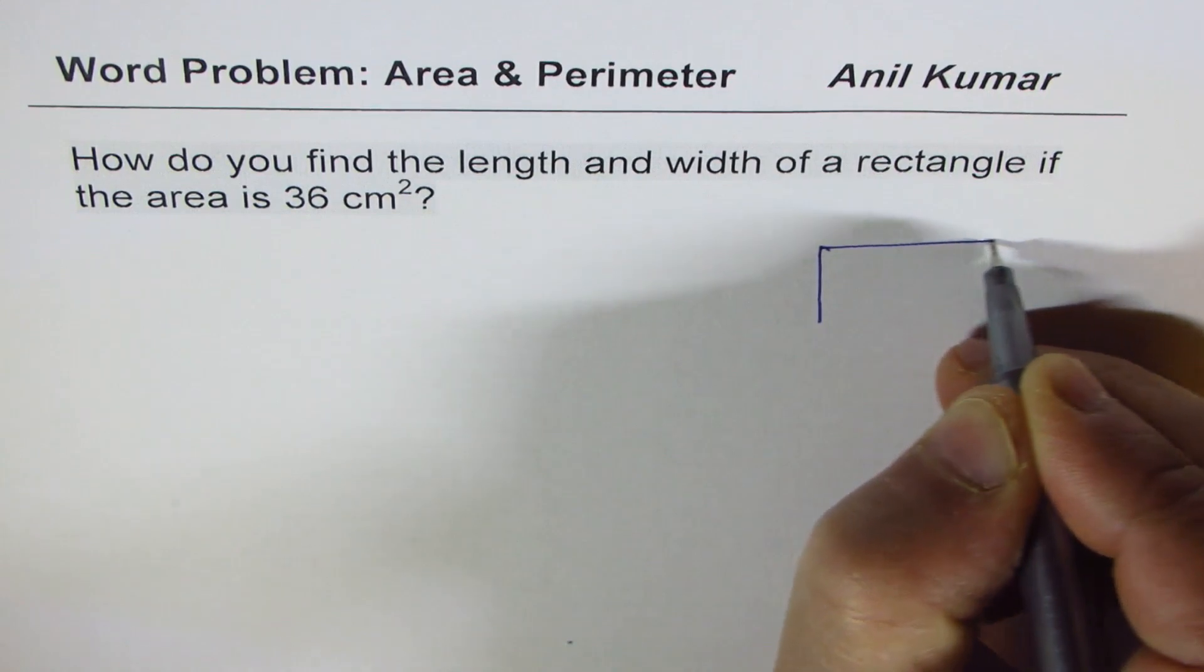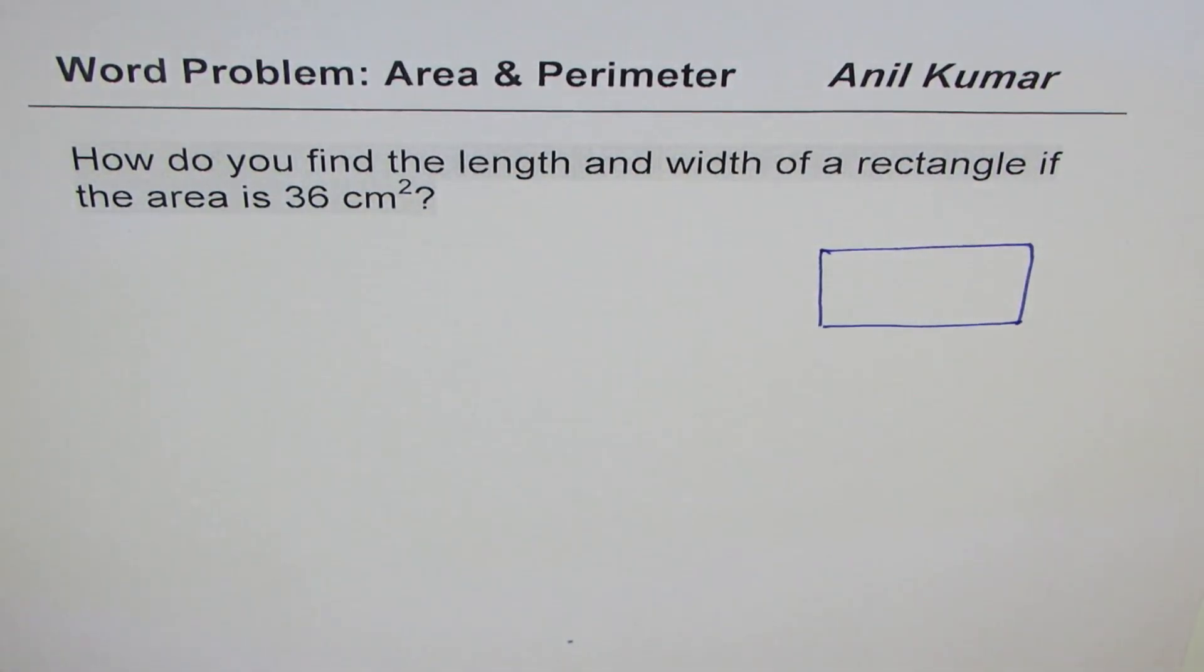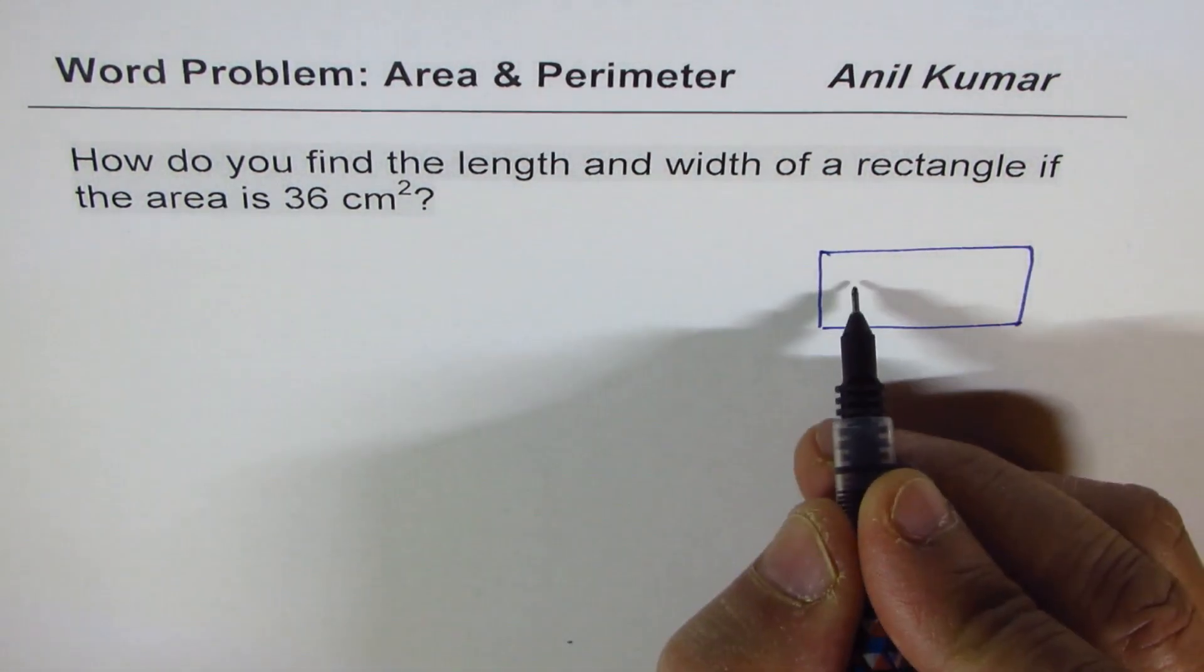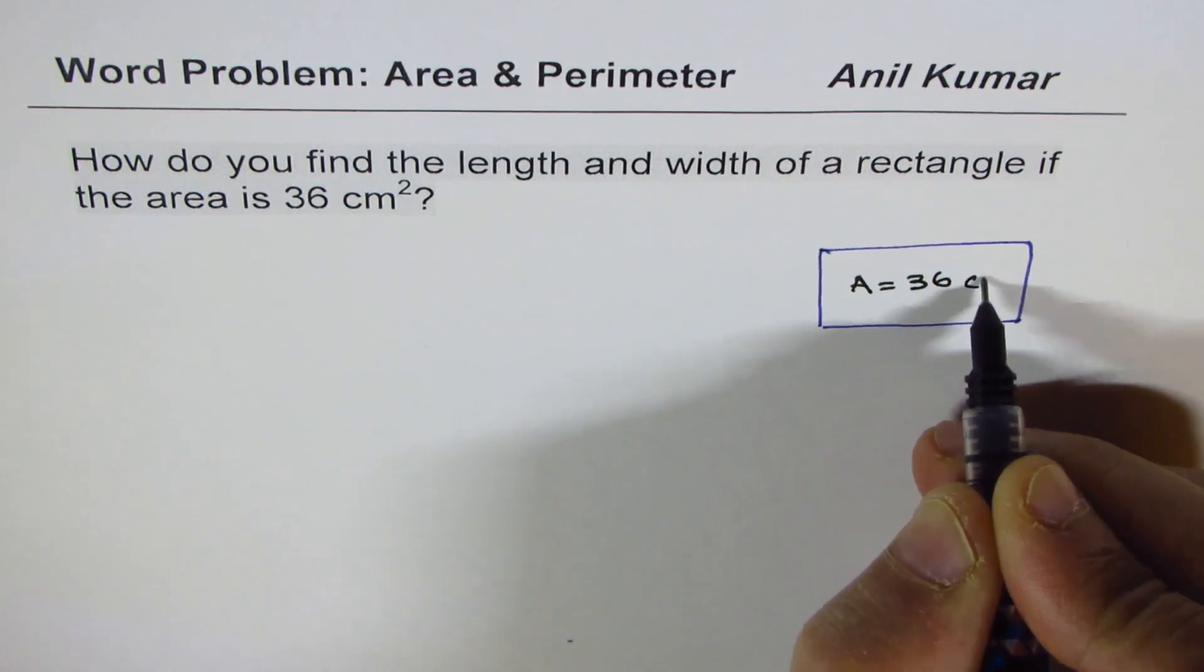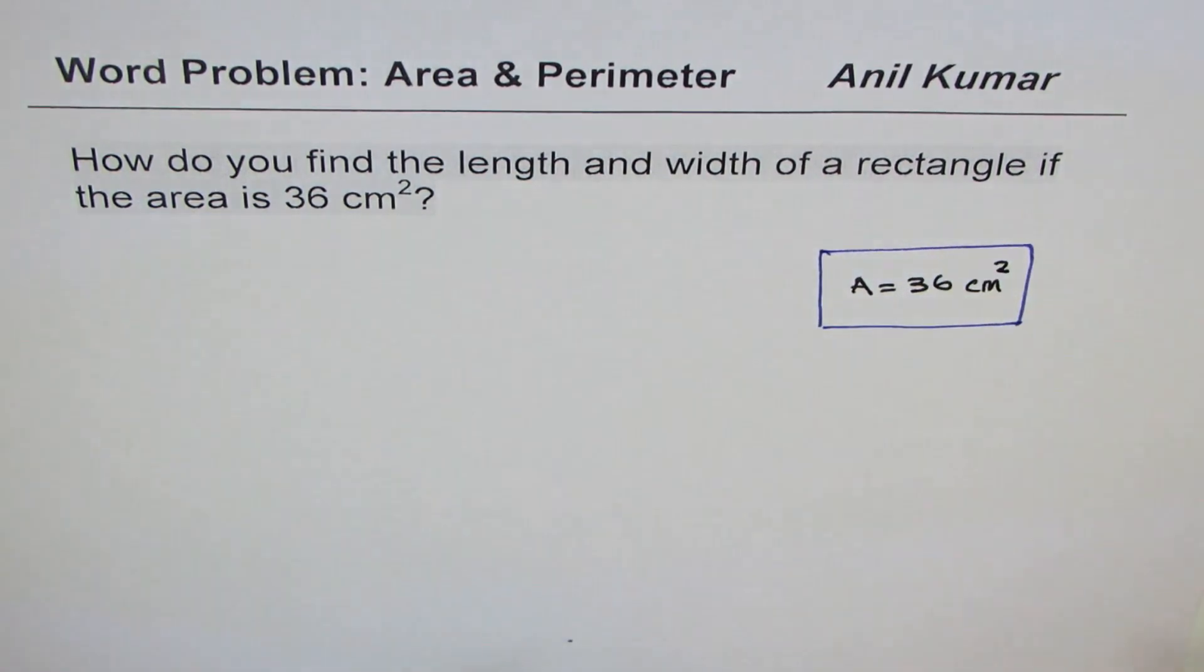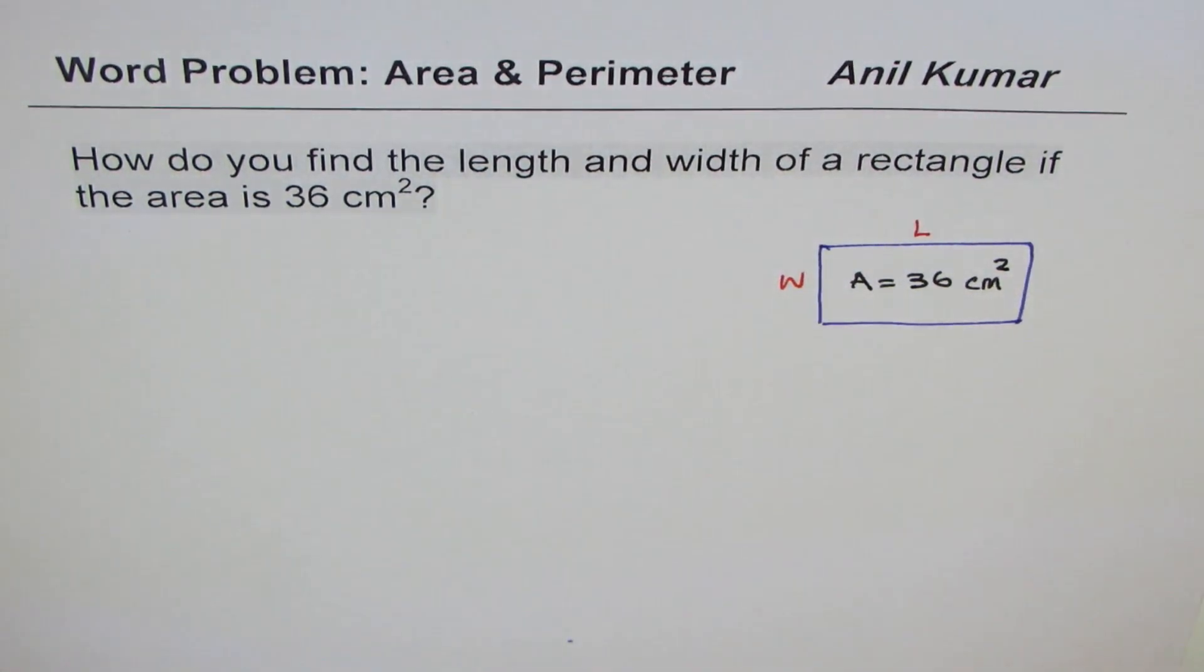In this case, we are given the area of a rectangle. We don't know anything else about it. We just know that area is 36 cm². The question is, how do you find what is the length of this rectangle and what is the width of this rectangle?